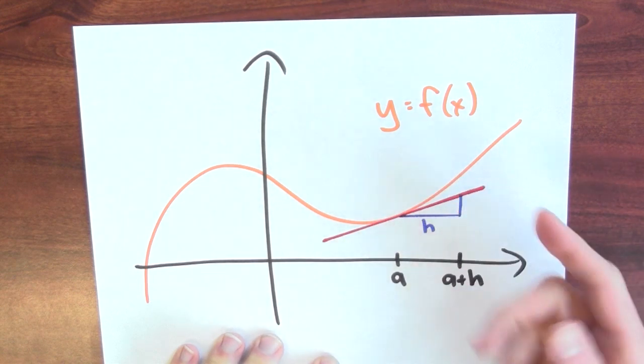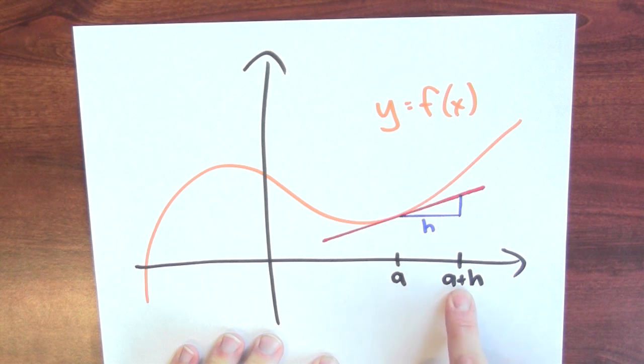Now, I want to know how is the output to f affected when the input moves from a to a plus h. I want to know what happens when I wiggle the input over by adding h.